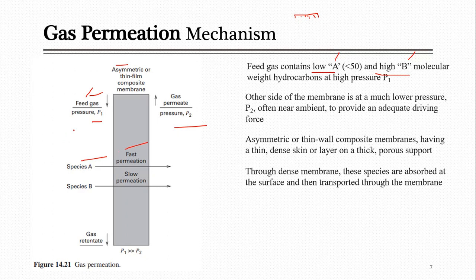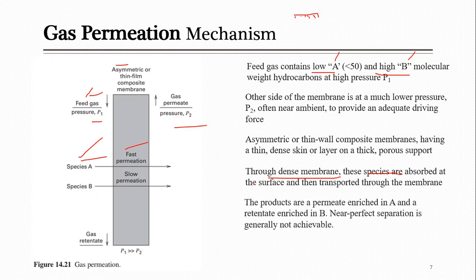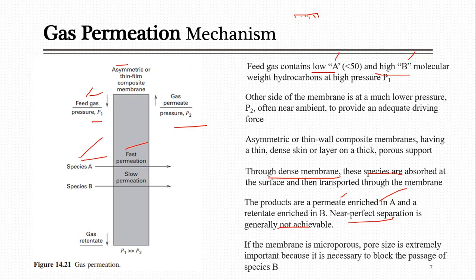Through the dense membrane, species A is absorbed and passes through easily, while species B cannot — or only very small amounts pass. The permeate is enriched in A while the retentate is rich in B. However, near-perfect separation is generally not achievable — some B will be in the permeate and some A will remain in the retentate. For microporous membranes, pore size must be carefully selected so that only some components pass through and others are stopped by size.